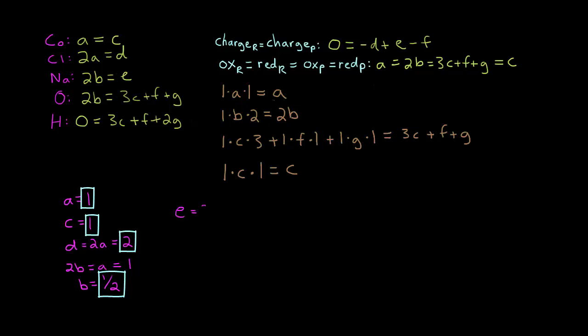We have A, B, C, D, and E solved. The charge equation only has F in it, so we can use that to solve for F. Moving negative F to the left side: F equals negative D plus E. D equals 2 and E equals 1, so F equals negative 2 plus 1, which gives F equals negative 1.